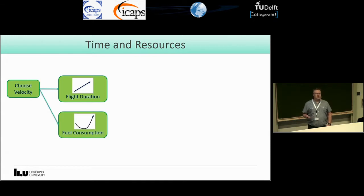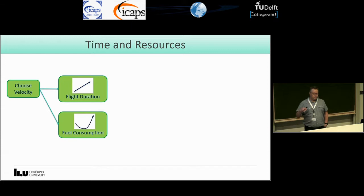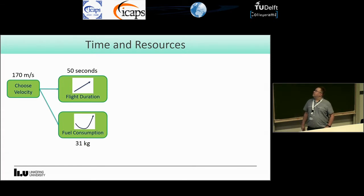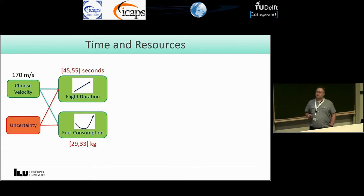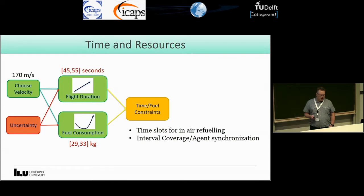We get the duration from a linear function of the chosen velocity, and we also have a fuel consumption that is highly non-linear in velocity — if you fly very slow you consume a lot of fuel, and if you fly fast you do again. An example: fly at 170 meters per second gives a duration of 50 seconds and 31 kilos of fuel consumed. But in any realistic scenario we have uncertainty, so instead of crisp numbers we have intervals — flying takes between 45 and 55 seconds, an uncontrollable duration, and fuel consumption is also in a range. We have constraints on time and fuel, including time slots for refueling and the coverage intervals.